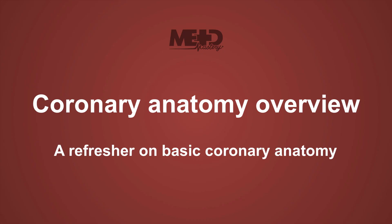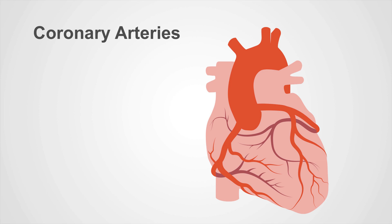So let's start by refreshing our memory about basic coronary anatomy. You'll recall that in the majority of patients, there's both a left and a right coronary artery. There are obviously some variations to this, and some specific congenital abnormalities, which may be discussed in a later chapter or course. The coronary arteries originate from the aortic root, just above the level of the aortic valve, in the sinuses of Valsalva.